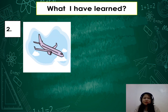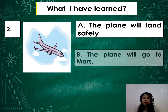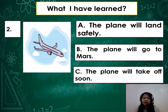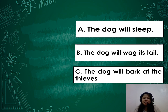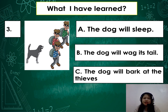Number 2: A — the plane will land safely; B — the plane will go to Mars; or C — the plane will take off soon. A, B, or C? Number 3: A — the dog will sleep; B — the dog will wag its tail; or C — the dog will bark at the thieves. A, B, or C?